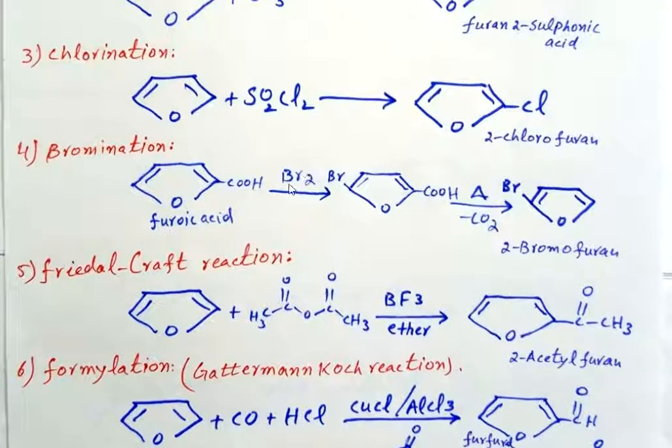In the next step, the furoic acid bromine derivative is treated with soda lime at elevated temperature. As a result, carbon dioxide CO2 is evolved and we get 2-bromofuran.